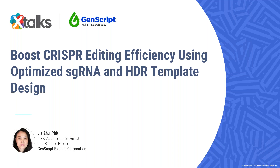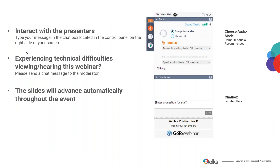Good day to everyone joining us, and welcome to today's Xtalks webinar. Today's talk is entitled 'Boost CRISPR Editing Efficiency Using Optimized sgRNA and HDR Template Design.' My name is Sonia Hunt, and it's my pleasure to be your Xtalks moderator for today. Today's webinar will run for approximately 60 minutes and includes a Q&A session. Please feel free to submit questions and comments for our speaker throughout the presentation using the questions chat box, and we'll try to attend to your questions during the Q&A session.